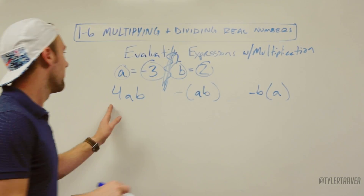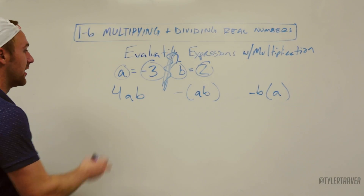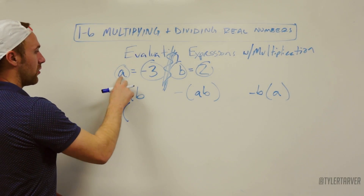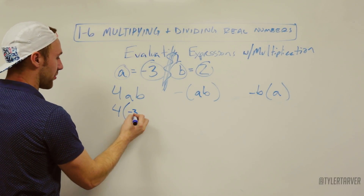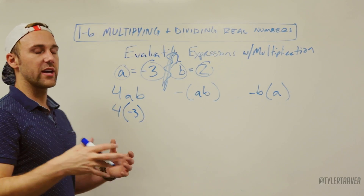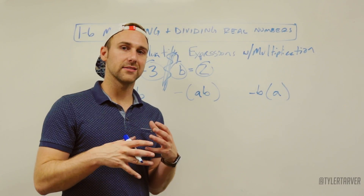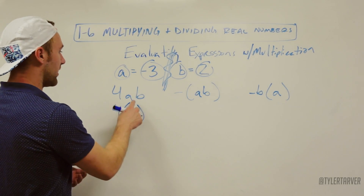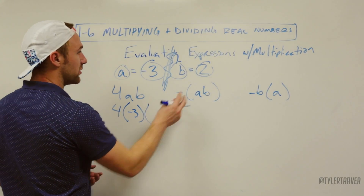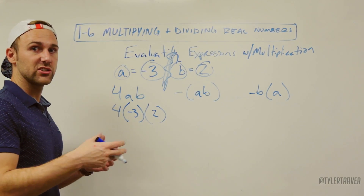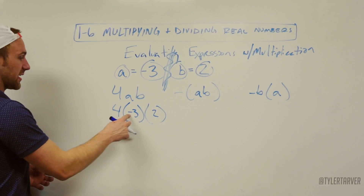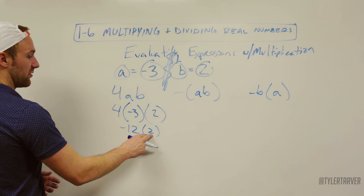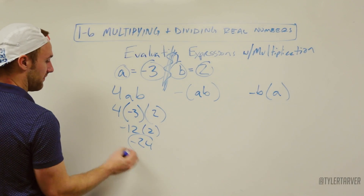So let's look at it. 4 times A times B. I know 4 is still going to be its own number. Times A, which I can replace with negative 3. The easiest way to not get mixed up when you're messing with all these signs is to put them in parentheses and then start simplifying. And then I'm multiplying times B, which is positive 2. Using order of operations: 4 times negative 3 is negative 12, and negative 12 times 2 is negative 24.